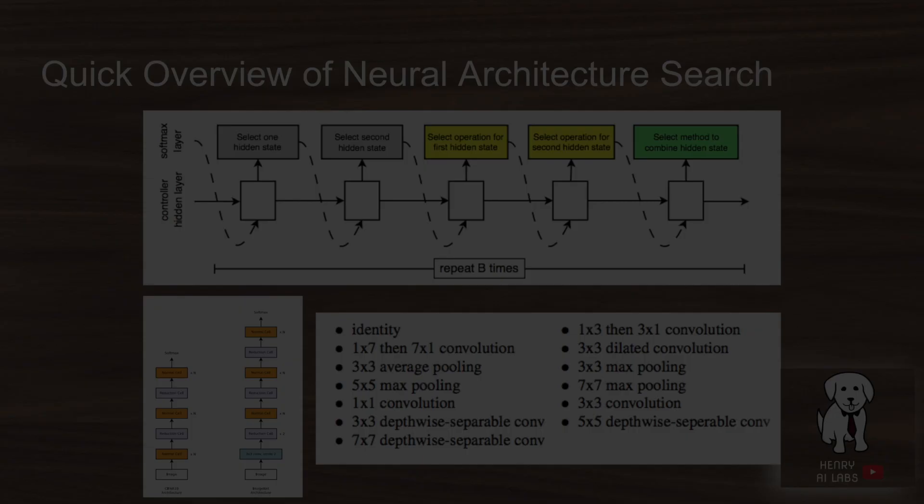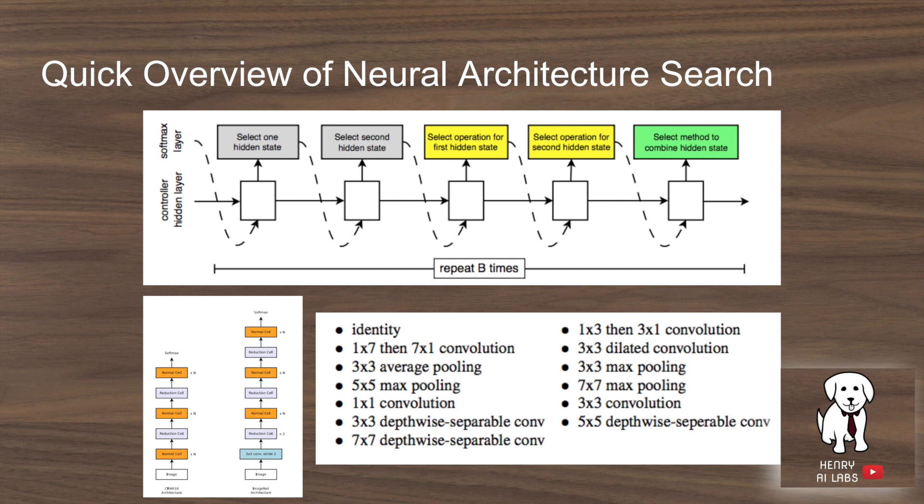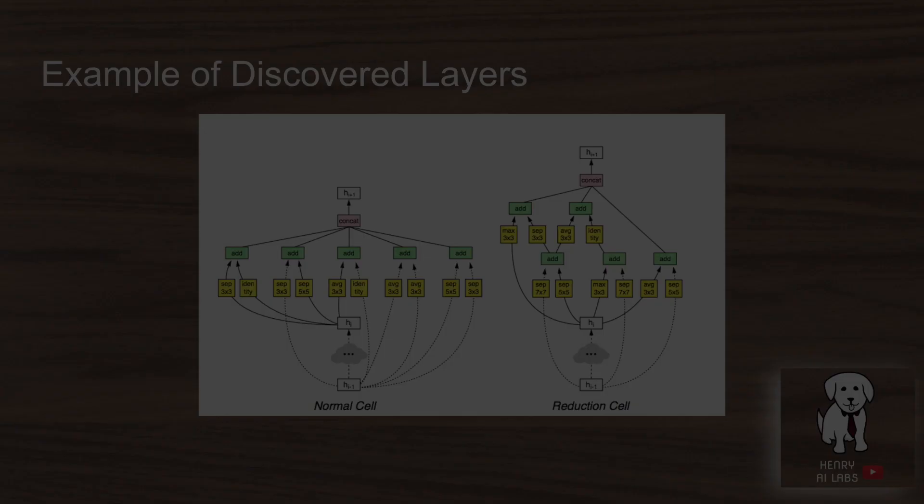The quick overview of neural architecture search is that it designs two convolutional layers: a normal cell and a reduction cell. The reduction cell is used to reduce the spatial resolution of layers. The algorithm chooses from a set of operations using a recurrent network procedure, and this is an example of a discovered layer from the neural architecture search algorithm.